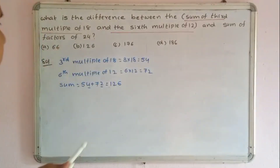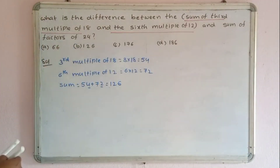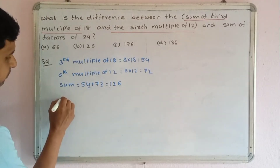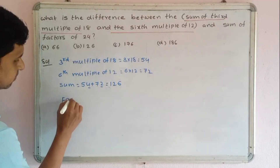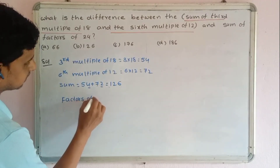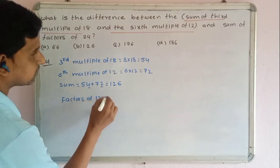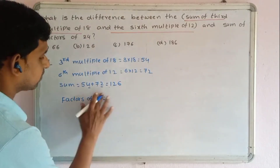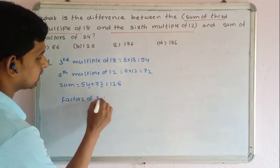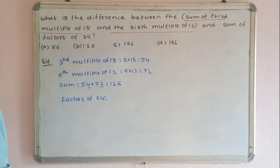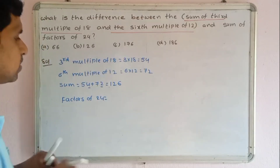Now find the sum of factors of 12. A factor is a number which exactly divides another number. The factors of 12 are: 1, 2, 3, 4, 6, and 12.